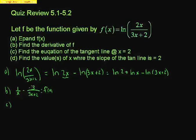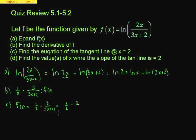For part c, find the equation of the tangent line at x = 2. For the equation of the tangent line, we need the slope, which comes from the derivative. Evaluating at x = 2: that gives 1/2 minus 3/(3·2 + 2) = 1/2 minus 3/8. And 1/2 minus 3/8 equals 1/8. So the slope is 1/8.